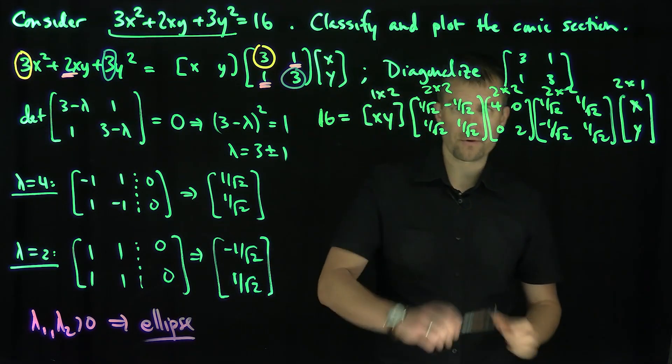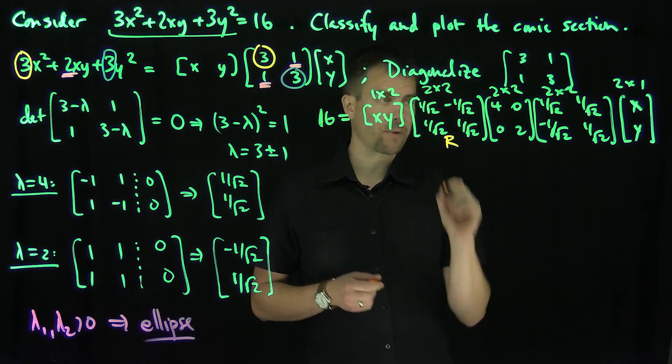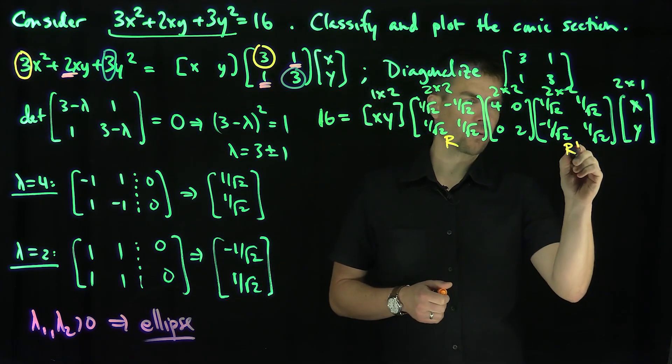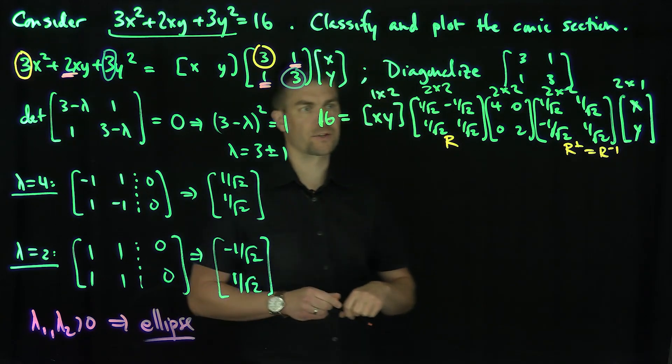Now let's call this matrix R, because this is really a rotation matrix, and this is R transpose. And R transpose is R inverse because it's an orthogonal matrix.